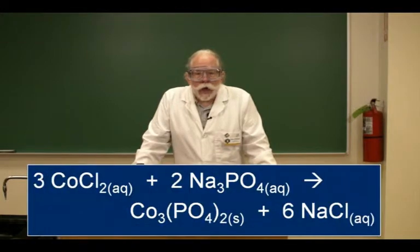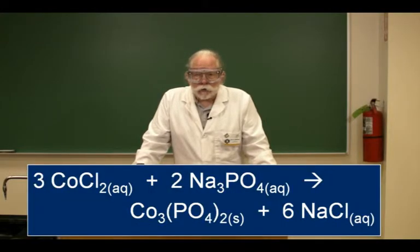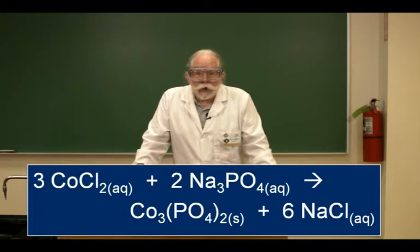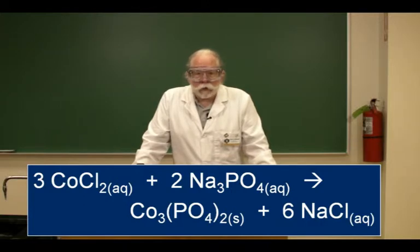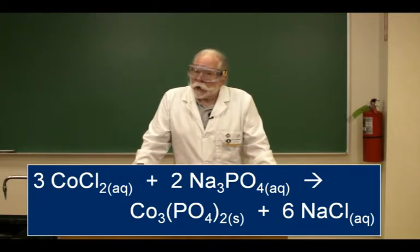In our balanced chemical reaction, the cobalt chloride and sodium phosphate trade ions, giving us solid cobalt phosphate and sodium chloride, which stays dissolved.